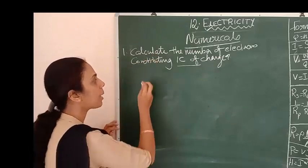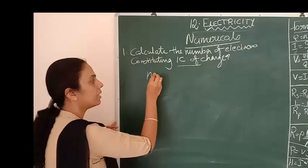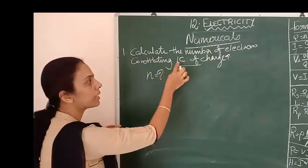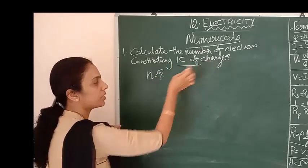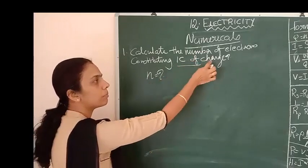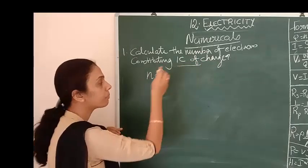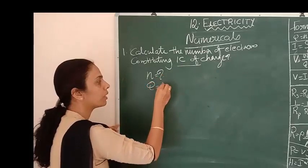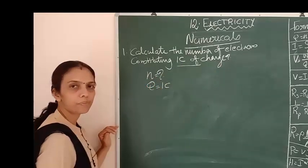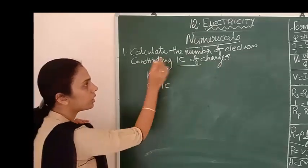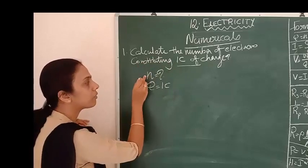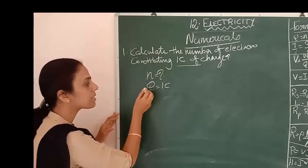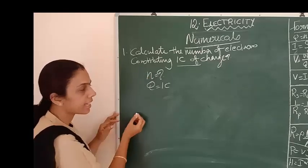Coming back to the question: calculate the number of electrons constituting one coulomb of charge. The given data is charge Q equals one coulomb. We need to find out N, the number of electrons. What is the relation connecting Q and N?